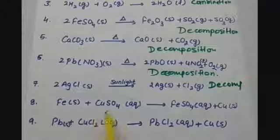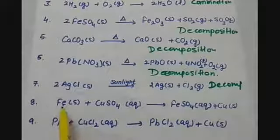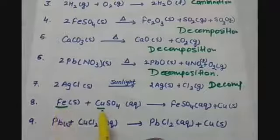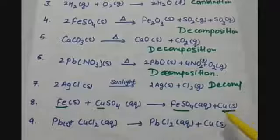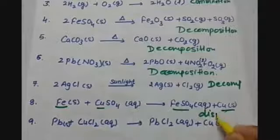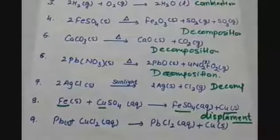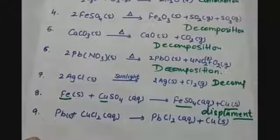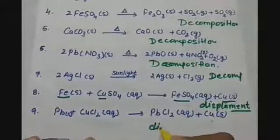Iron reacting with copper sulfate converts into ferrous sulfate and copper is displaced. You can see that iron, which is more reactive than copper, replaces the copper from the compound and forms ferrous sulfate while copper is displaced. This is a displacement reaction which is based on the reactivity of the elements. Next, lead reacts with copper chloride and forms lead chloride while copper is displaced — again a displacement reaction.